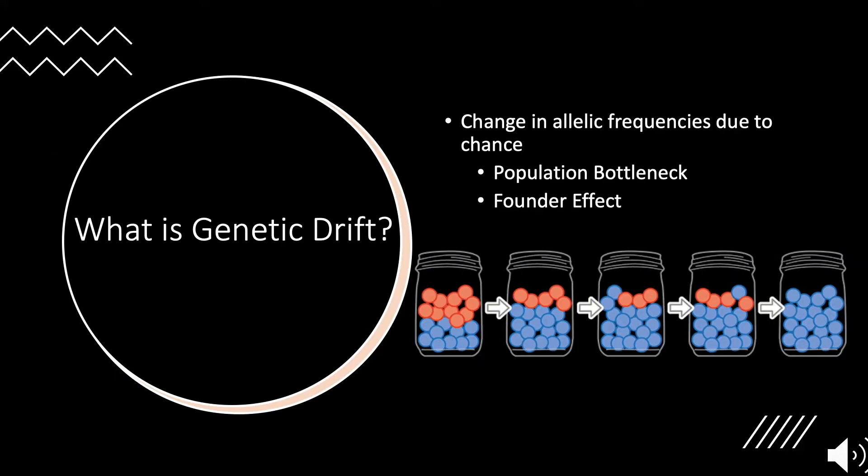So what exactly is genetic drift? Simply put, it's just the change in allelic frequencies due to chance events. There are different types of genetic drift that we're going to get into today, which are population bottleneck and founder effect, but we'll look at that in a bit.